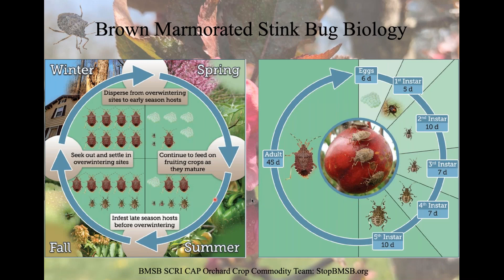Brown marmorated stink bug overwinters as an adult. This is where you see them coming into homes — especially in the mid-Atlantic in huge numbers. A couple of years ago, a New Yorker article described a family who woke up to find thousands had invaded their bedroom. In the spring, the adults leave their overwintering sites, go out, lay eggs, and start to feed — generally out in wild spaces and forested areas. Once they have exhausted those food stores out in the wild spaces, they tend to move into cropping systems. They have one to two generations per year, depending on how long the warm weather lasts.